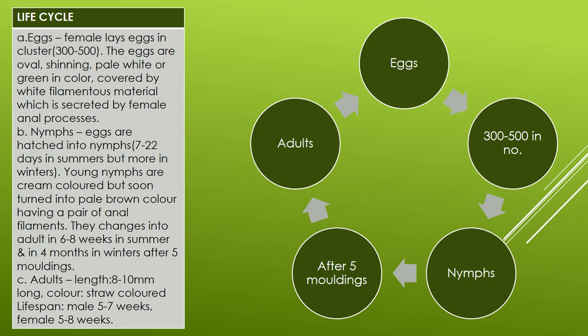The nymph stage lasts 6 to 8 weeks in summer and 4 months in winter. The adult stage: adults are approximately 8 to 10 mm in size and straw-colored. Males live 5 to 7 weeks and females live 5 to 8 weeks.